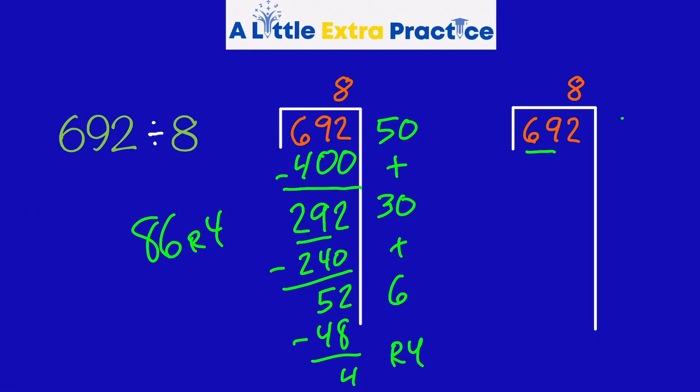8 times 8 is 64. 8 times 80 would be 640. I could come closer, but I'm trying to make this easy on myself, so I'm just picking numbers with the power of 10. 80, 50, 30. Subtract. And I have a 52.